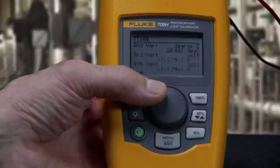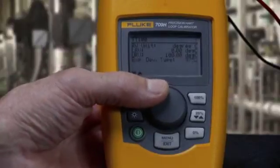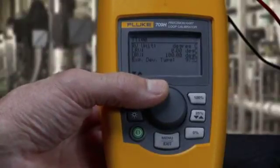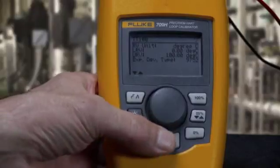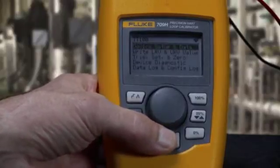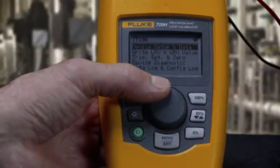In this screen, you can see the device's HART tag, PV or process variable information, and ranging. This tag has a range of 0 to 100 degrees Celsius.